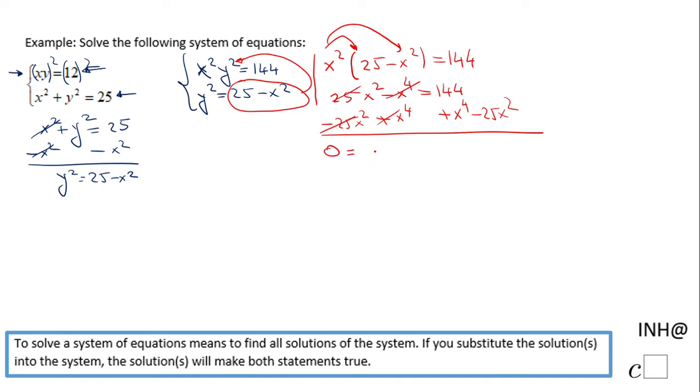The polynomial equation is x to the fourth power minus 25x squared plus 144. Now this fourth degree equation can be reduced to a second degree by using a substitution.